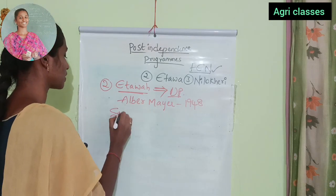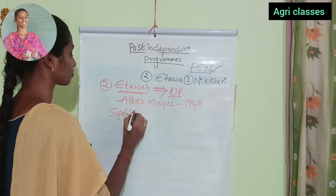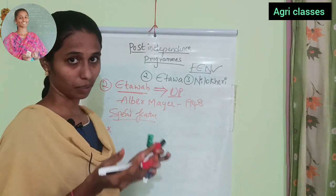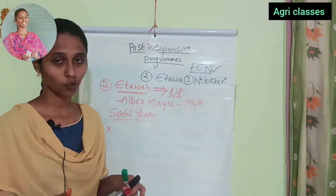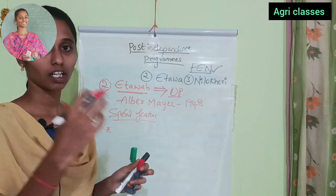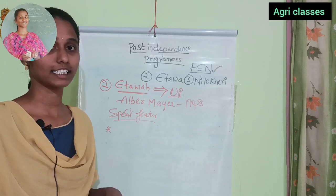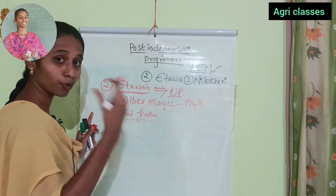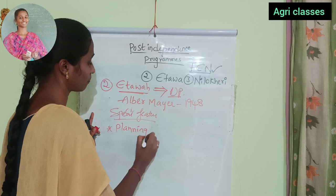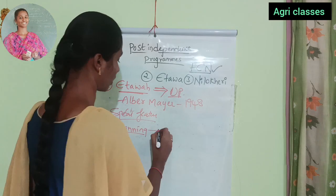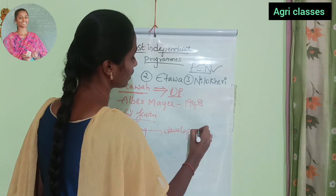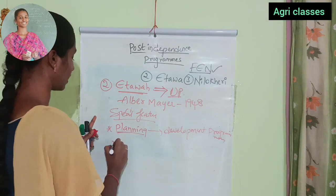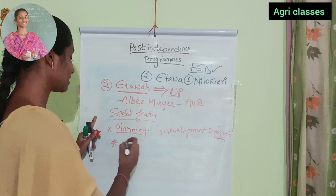The main special features of the ETAWA project include a planned development program. For example, villages would use sanitation to reduce diseases, clean roads, and improve drainage. In all of these areas a development plan would be set up. The process involves: first study the project, then implement it.